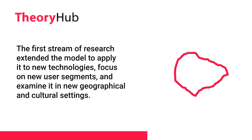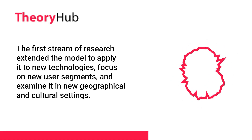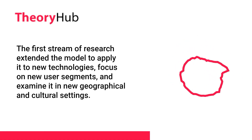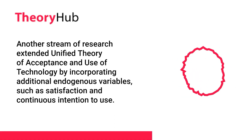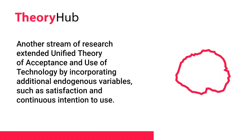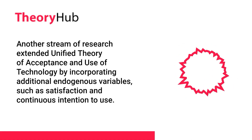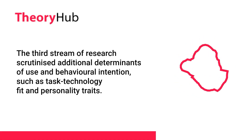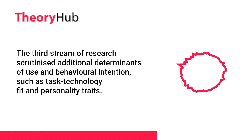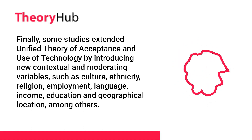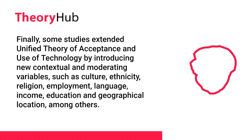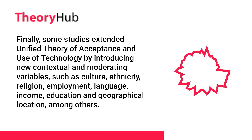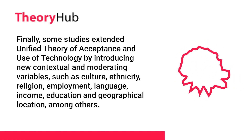The first stream of research extended the model to apply it to new technologies, focus on new user segments, and examine it in new geographical and cultural settings. Another stream extended UTAUT by incorporating additional endogenous variables such as satisfaction and continuous intention to use. The third stream scrutinized additional determinants of use and behavioral intention, such as task technology fit and personality traits. Finally, some studies extended UTAUT by introducing new contextual and moderating variables such as culture, ethnicity, religion, employment, language, income, education and geographical location, among others.